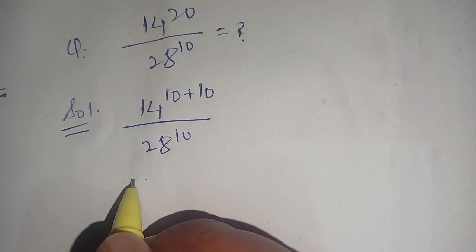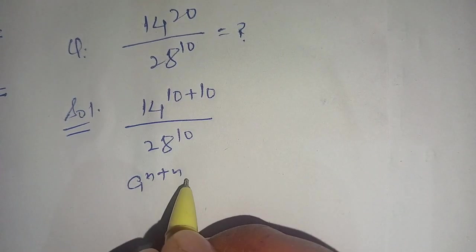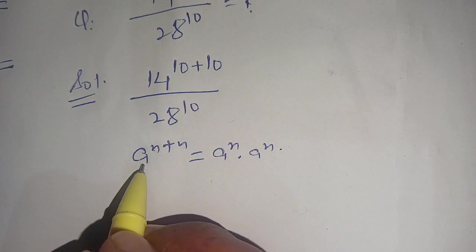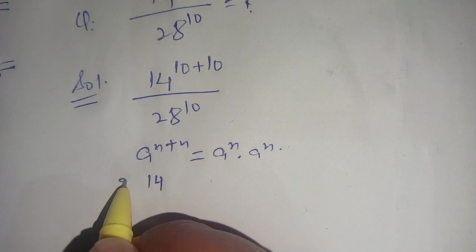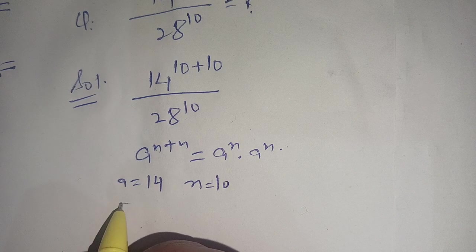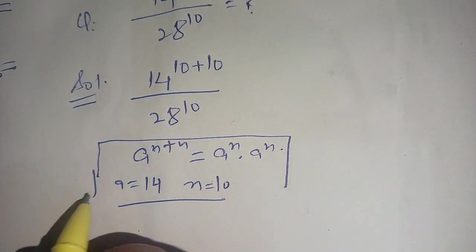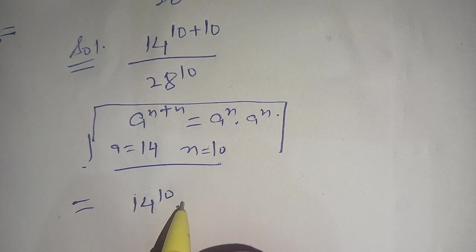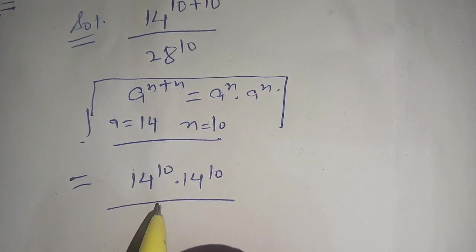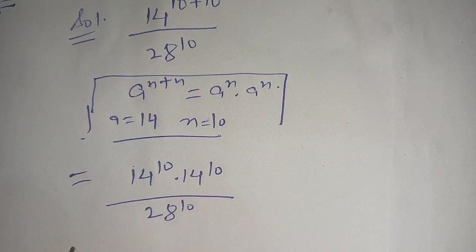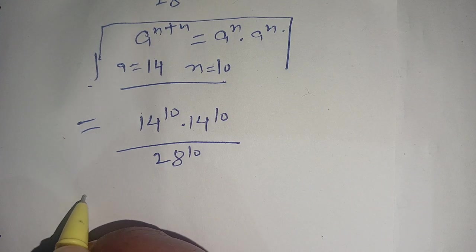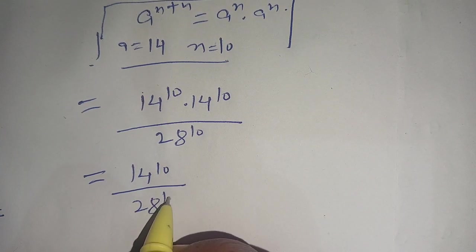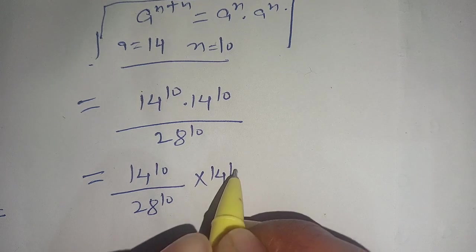Now in the next step, we know that a power (n plus n) is equal to a power n times a power n. Here a is 14 and n is equal to 10. Now we use this identity in our numerator. Our numerator becomes 14 power 10 times 14 power 10, over 28 power 10.